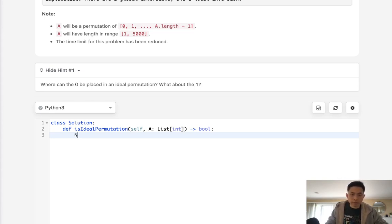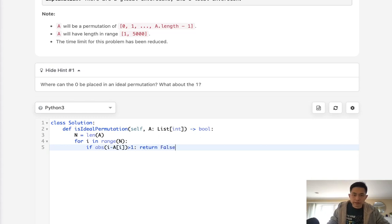So I'll show you what I mean. What we can do is just initialize the length of A and say for i in range of n, at any point if the absolute value of i minus A[i] is greater than one then we can immediately return false because there's more than one global inversion then.